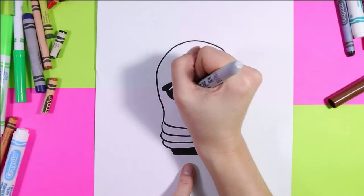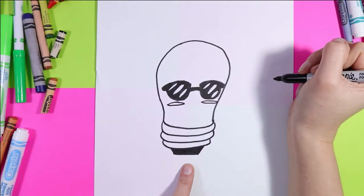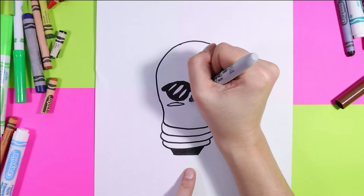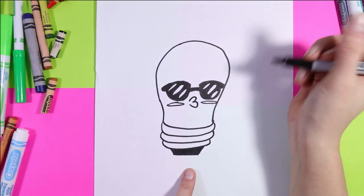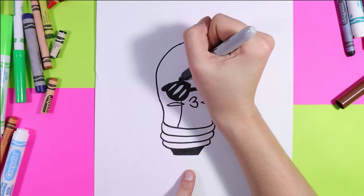Perfect! Next, underneath each of those sunglass shades, we'll draw a long skinny oval for the cheeks, and then you can give it some cute little lips.